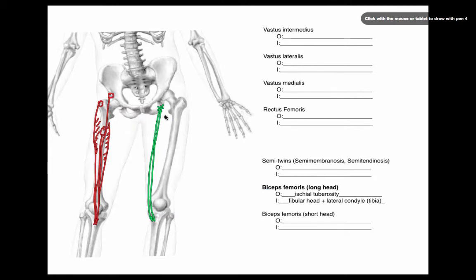Next, the other hamstring we're going to look at is the biceps femoris long head. These are also in the back, posterior, and also originating from the ischial tuberosity. In this case it swings to the lateral side and inserts on the fibular head and the lateral condyle, towards the back.